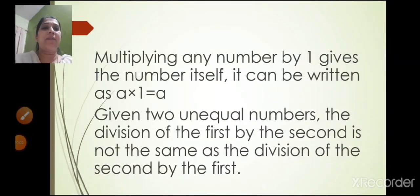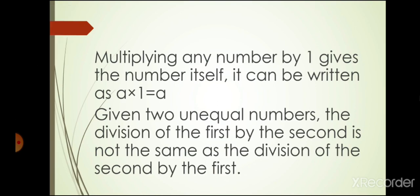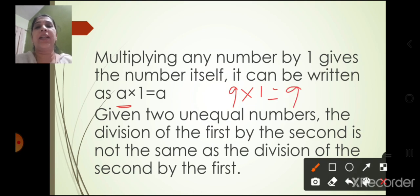Multiplying any number by 1 gives the number itself. This can be written as A into 1 is equal to A. For example, if A is 9, then 9 into 1 is equal to 9. So when you multiply any number by 1, you get the same number.